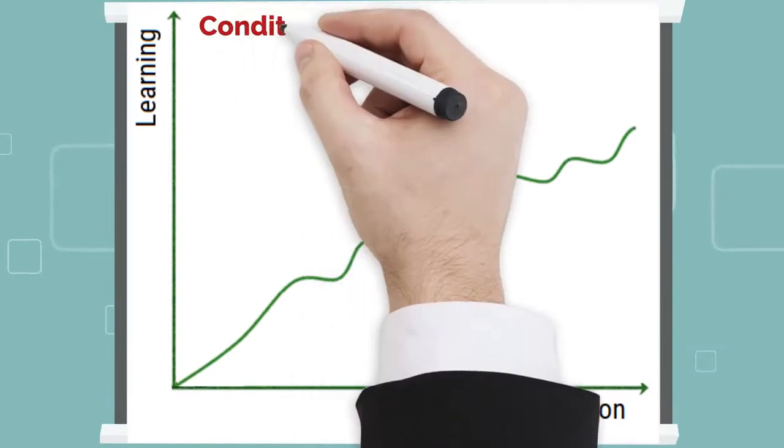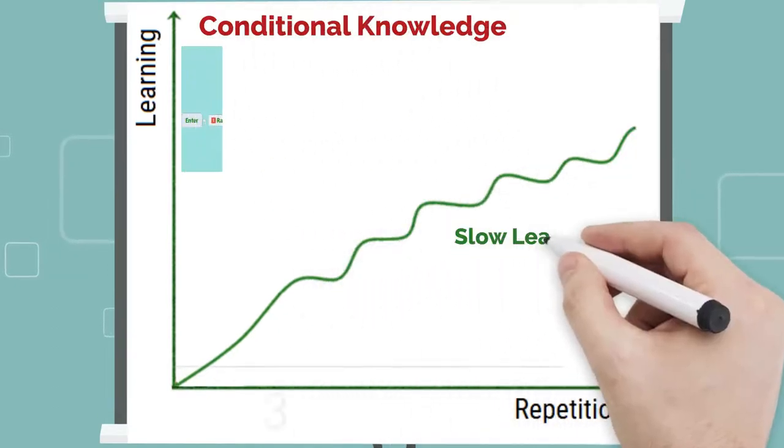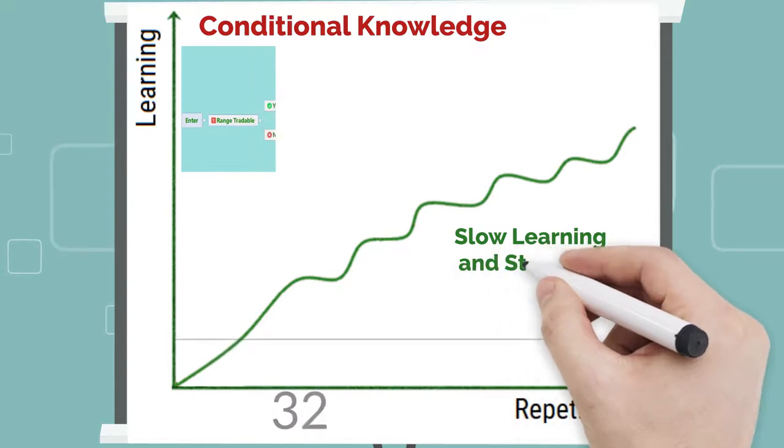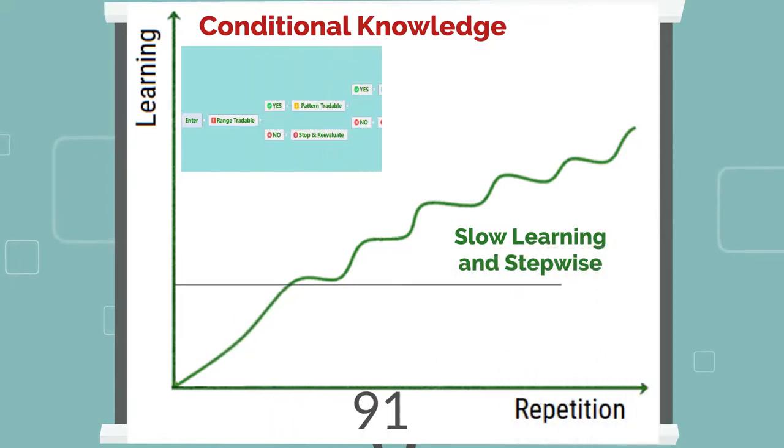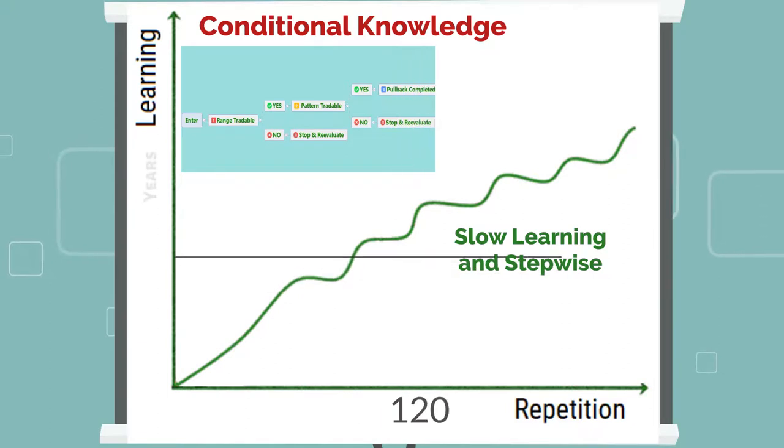The learning curve of conditional knowledge is slow and step-wise. It requires much more practice and repetitions under various situations over an extended period of time to turn this knowledge into skill.